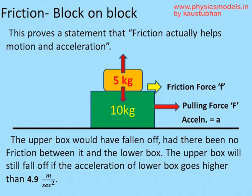Friction has helped the upper box move towards the right. Friction opposes the direction of relative motion tendency, but it doesn't oppose motion itself — the wording is very important here. The upper box tends to move towards the left as per Newton's first law, and friction opposes that tendency, therefore acting towards the right. If friction wasn't there, the upper box would have simply slipped and fallen off.